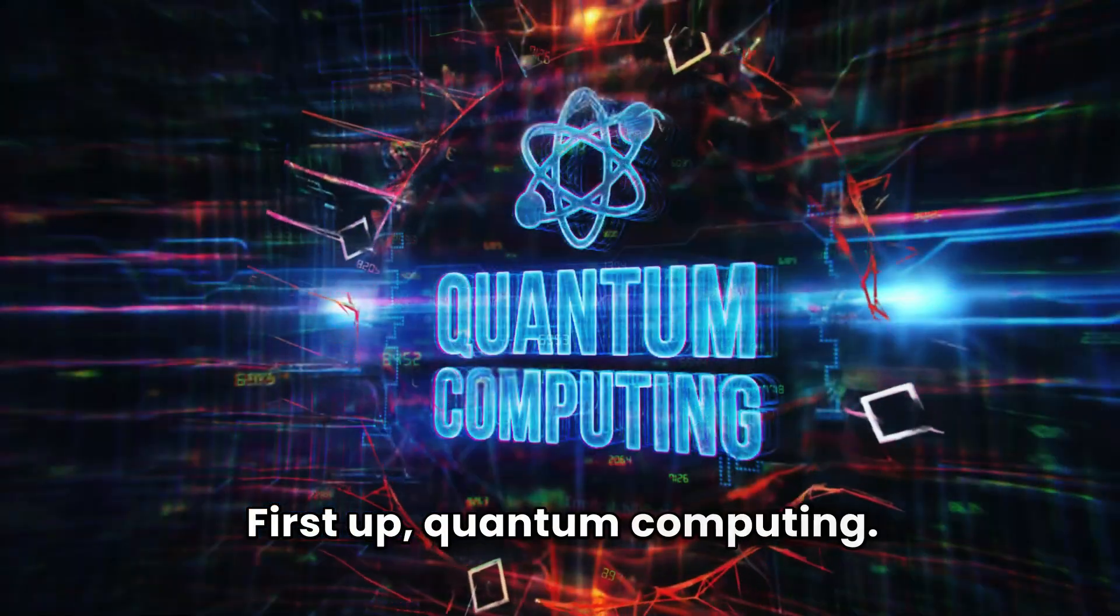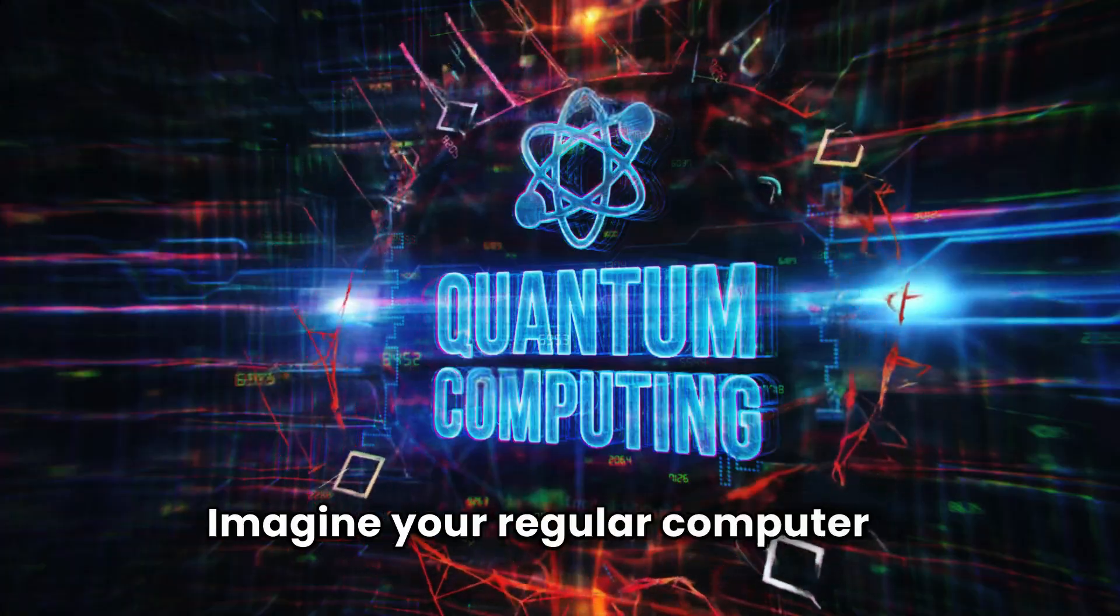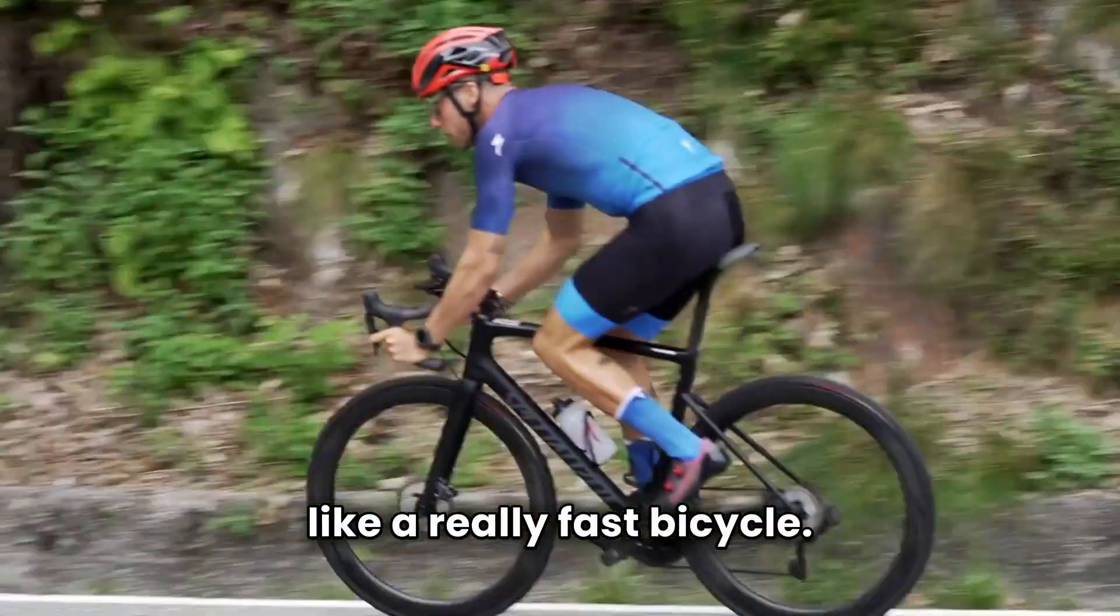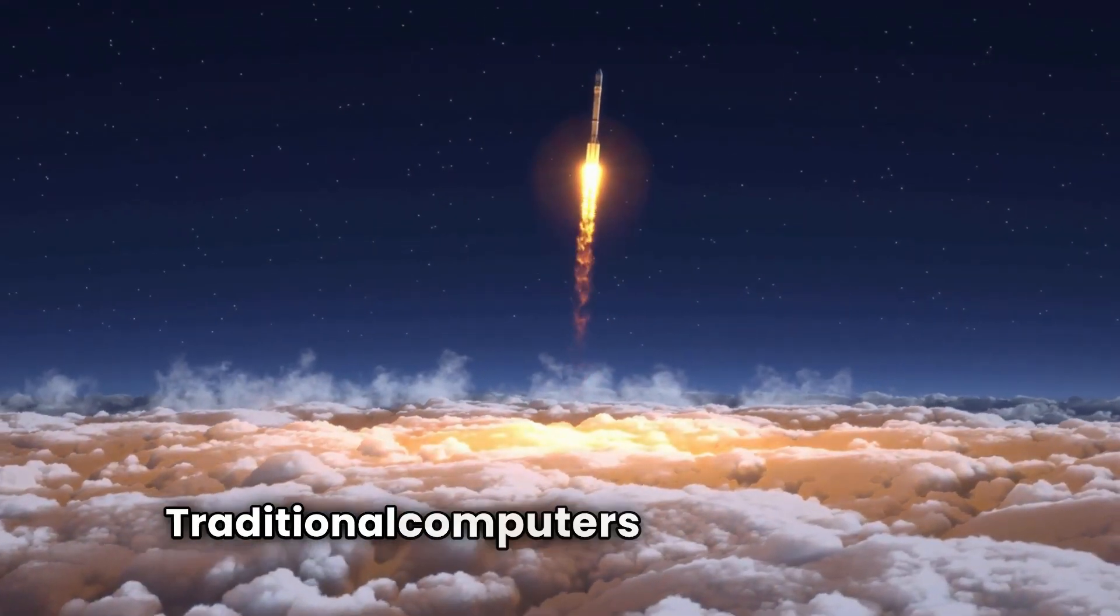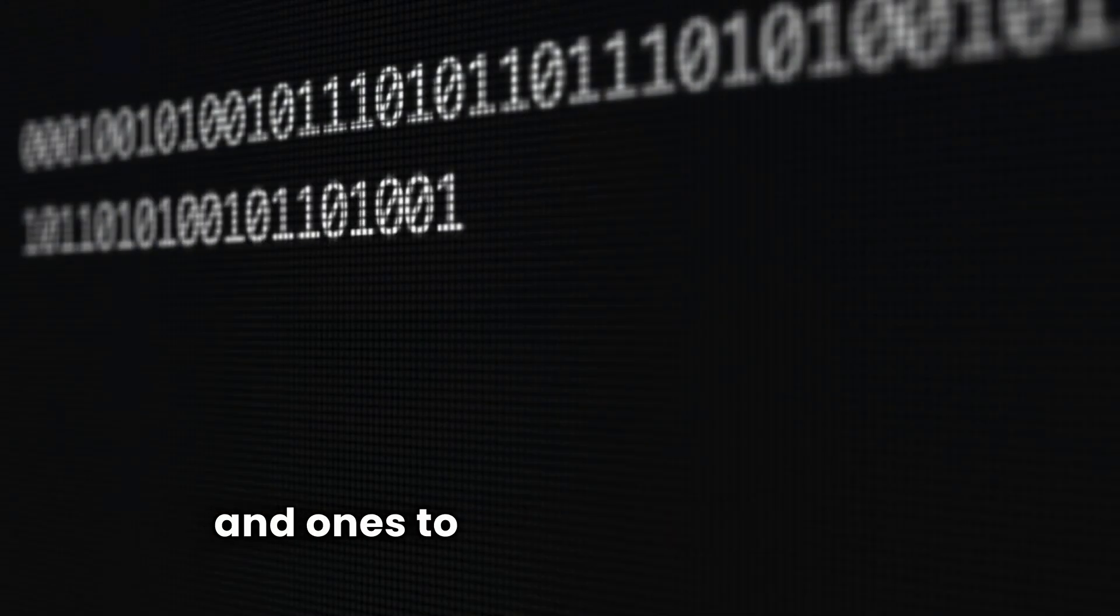First up, quantum computing. Imagine your regular computer is like a really fast bicycle. Now, a quantum computer is like a rocket ship. Traditional computers use bits, zeros and ones to process information.